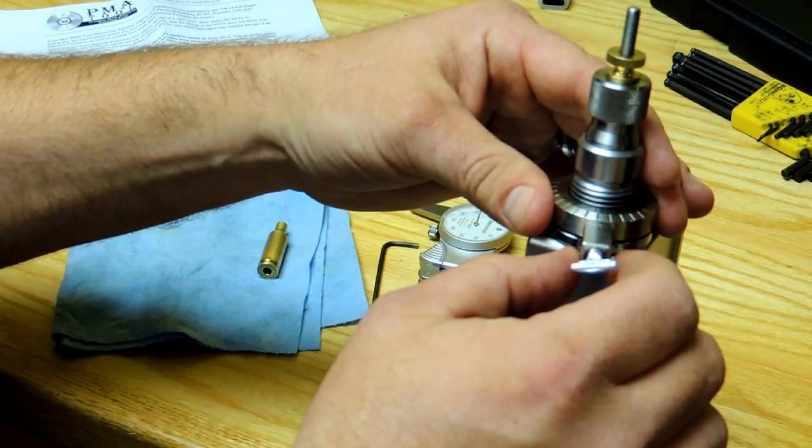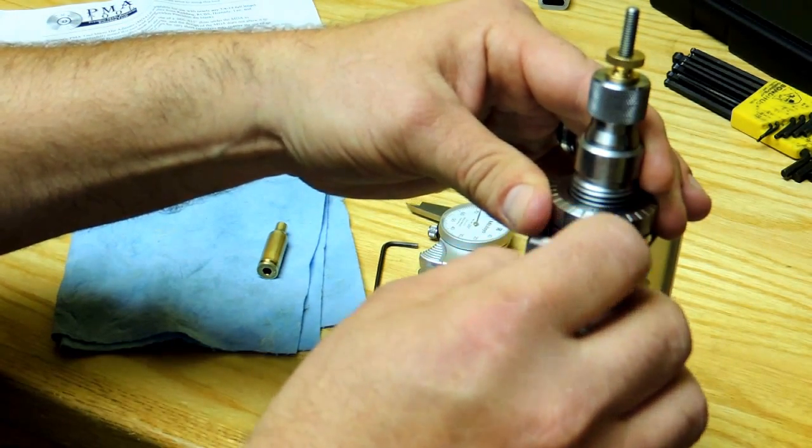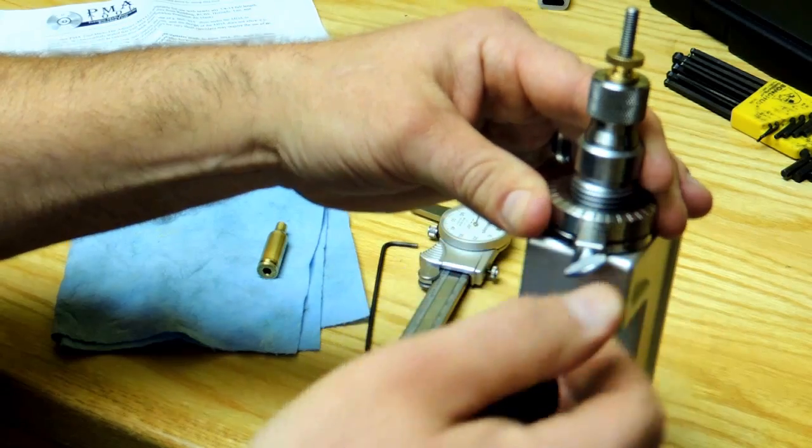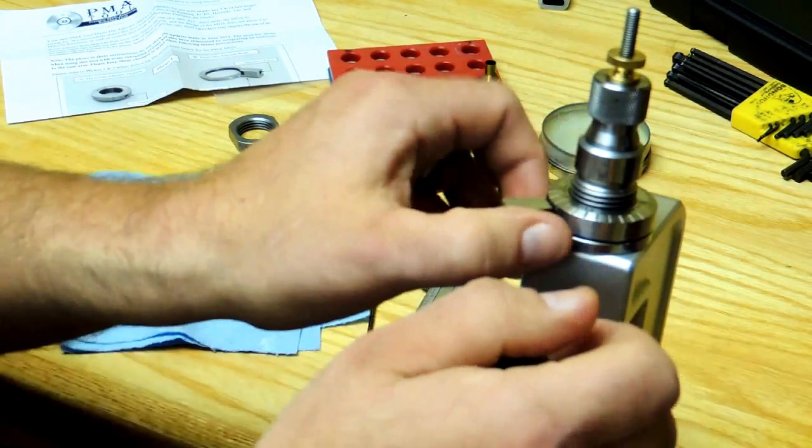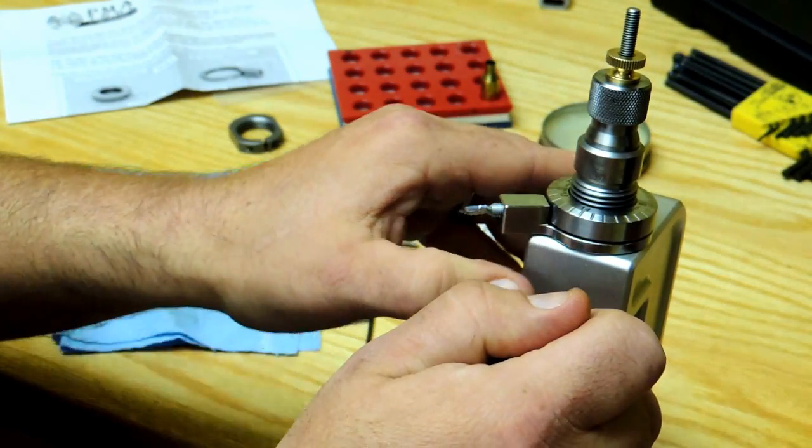Now once you have made your adjustment, we lock the adjustment locking screw and re-tighten the die and the press.